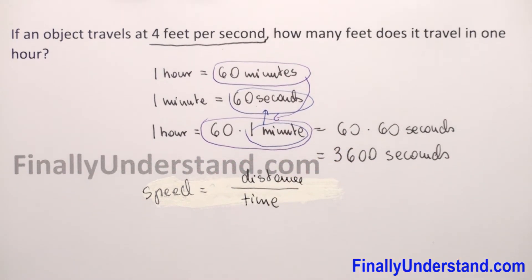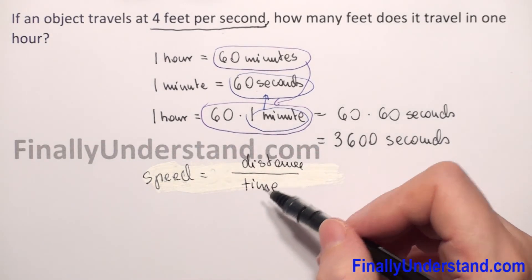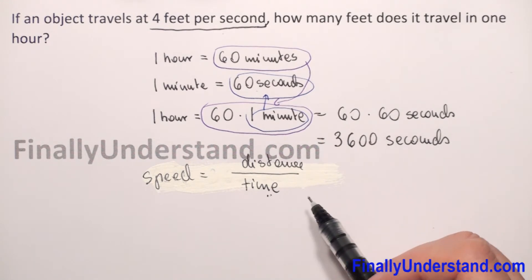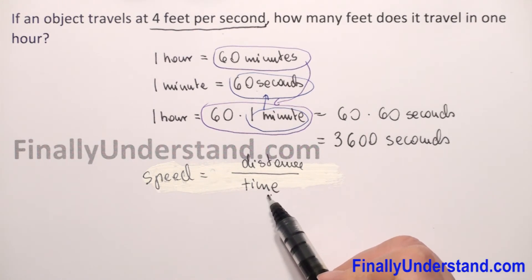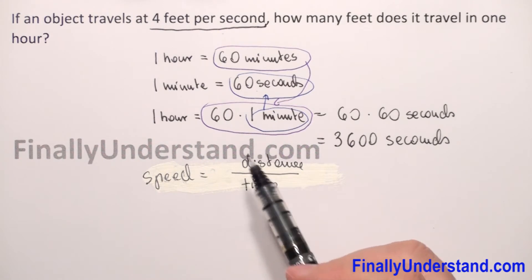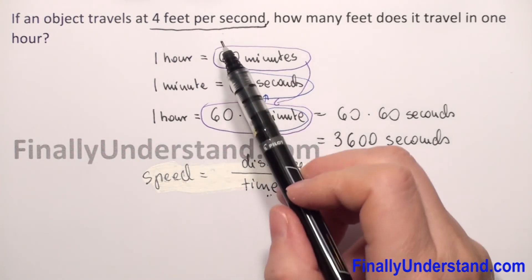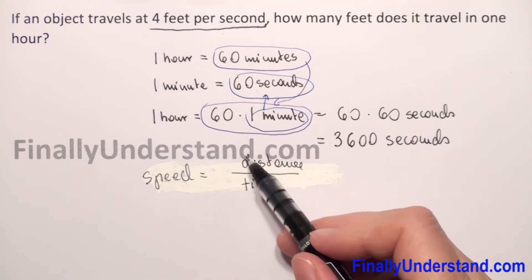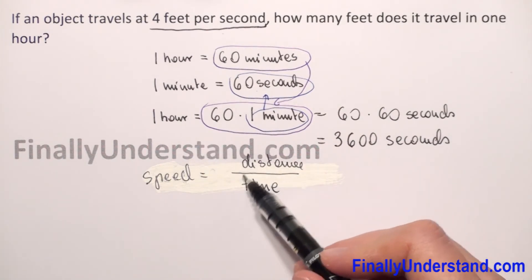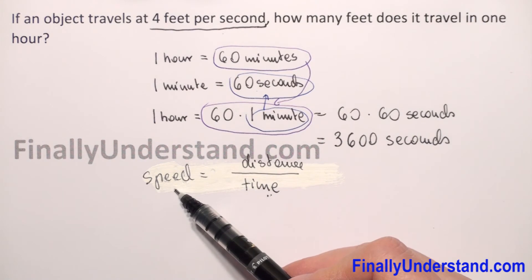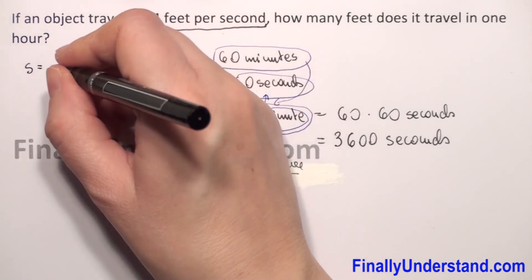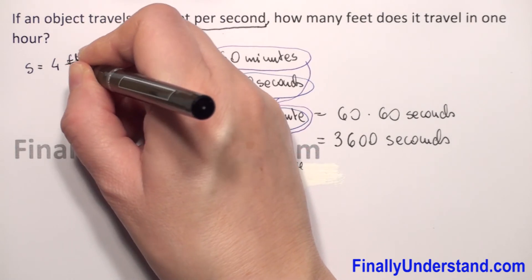In this example, we have been given the speed and the time. We changed one hour to seconds, so we have the speed of the object and the time. We need to find the distance. Because we have a fraction, I will substitute speed — we are given that speed equals 4 feet per second.